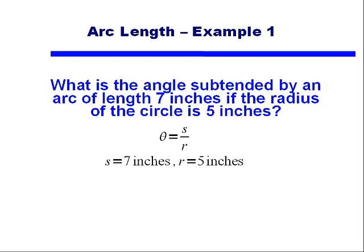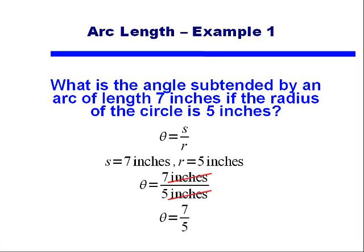And reading the problem, we can see the arc length S is equal to 7 inches and the radius of the circle is 5 inches. So we simply put that into our formula and come up with our angle of theta equaling 7 over 5. Remember this is in radians. Just because there's no pi there doesn't mean this is degrees. 7 divided by 5 is our answer in radians.